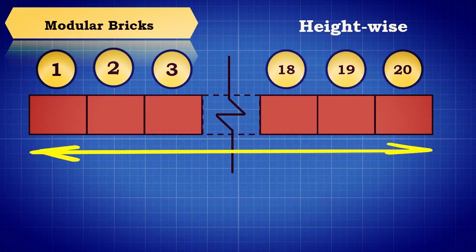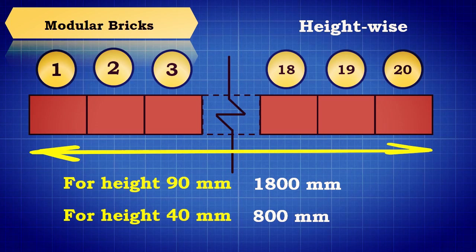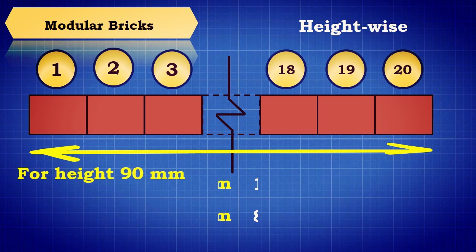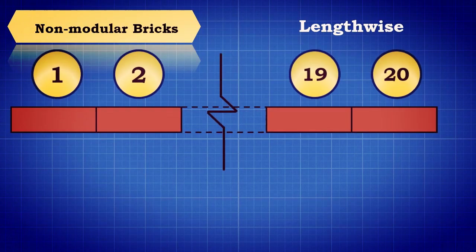When placed heightwise, it should be 1800 mm for 90 mm height bricks and 800 mm for 40 mm height bricks. The tolerance limit of acceptance is between 1760 mm and 1840 mm for 90 mm bricks, and between 760 mm and 840 mm for 40 mm bricks, that is plus or minus 40 mm.